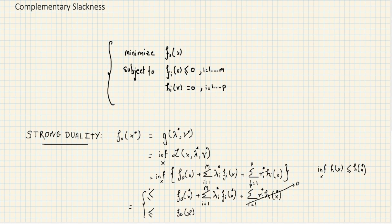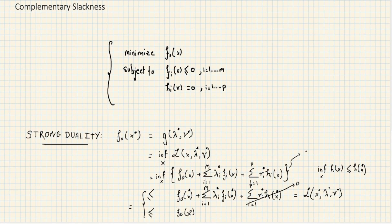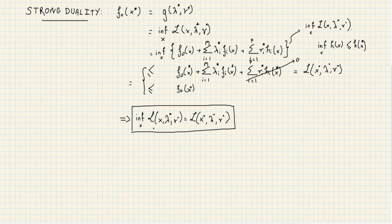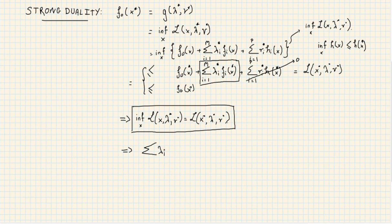We end up with f0(x*) ≤ f0(x*), which means all those inequalities are actually equalities. This tells us that the infimum of the Lagrangian over x equals the Lagrangian evaluated at x*, and crucially, the weighted sum of inequality constraints is not just non-positive but exactly zero. The Lagrangian can have multiple minimizers in x, one of which is x*.